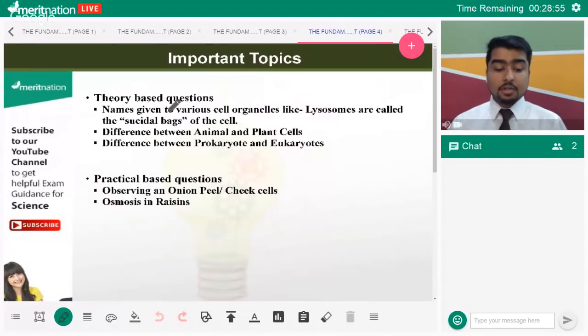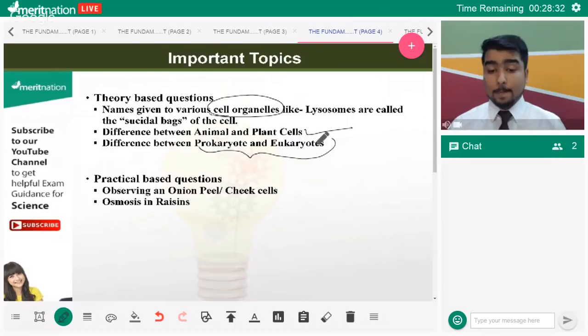What are the topics that can come in the exam? Names of the cell organelles can straight away come. They will simply ask you to name the suicidal bags of the cell. Differences between animal and plants are very important. You should be able to answer these questions. Difference between a prokaryote and a eukaryote, and it is not just the nuclear membrane, there are certain other differences as well. You should be able to enumerate them. You might be asked to describe them using diagrams, so you should also be able to do that.